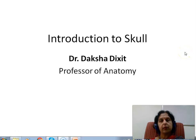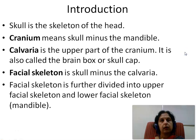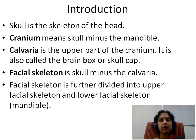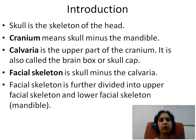Hello students, today we will be studying introduction to the skull bone. The skull is the skeleton of the head. Cranium means the skull minus the mandible. Calvaria is the upper part of the cranium and it is also called the brain box or the skull cap. The facial skeleton is the skull minus the calvaria, and it is further divided into upper facial skeleton and lower facial skeleton, which means the mandible.